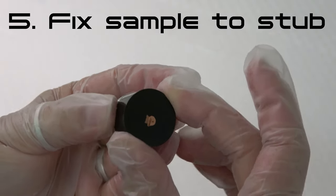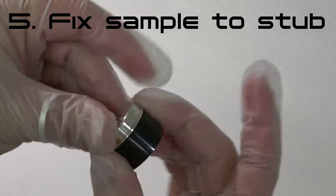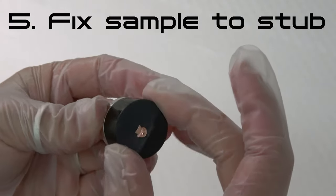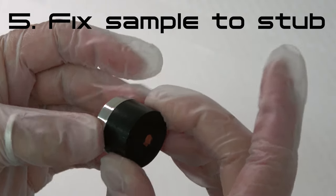Step 5: Center the sample on the stub and adhesive, and apply gentle pressure to fix the sample securely. Take care not to damage the surface to be examined or to touch it with bare fingers.